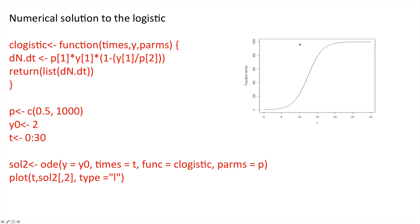And the overall population size eventually reaches this asymptote, this upper level, which in this case is the carrying capacity of that population.